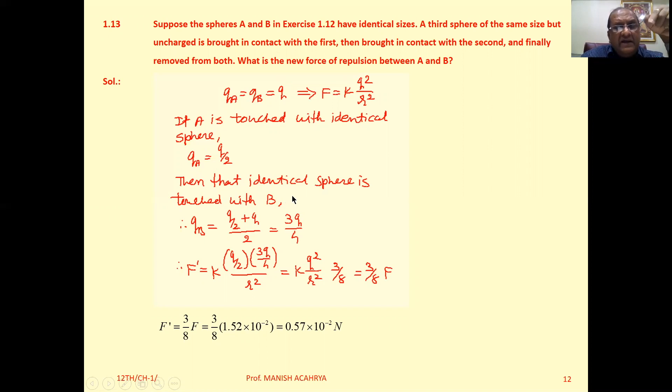On that identical sphere there is charge equal to Q/2, because initially on A the charge was Q and on that third sphere, which is identical, charge was 0. So with equal distribution, we have Q/2, Q/2, as discussed.